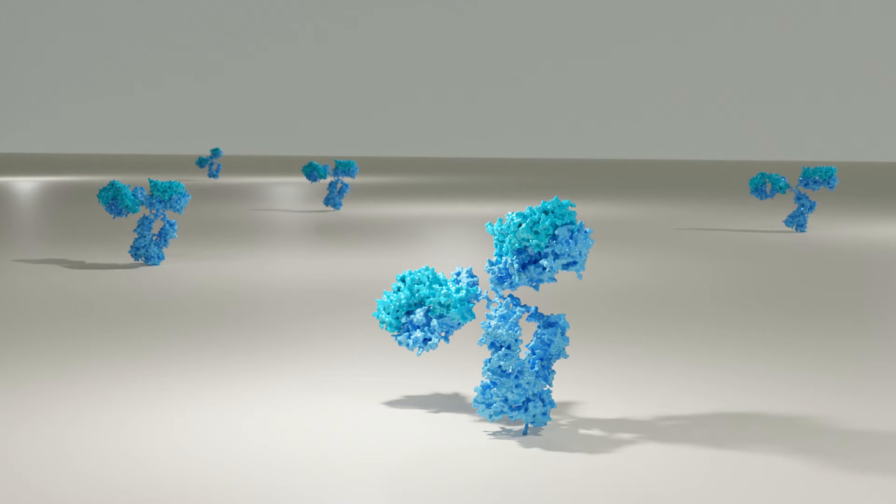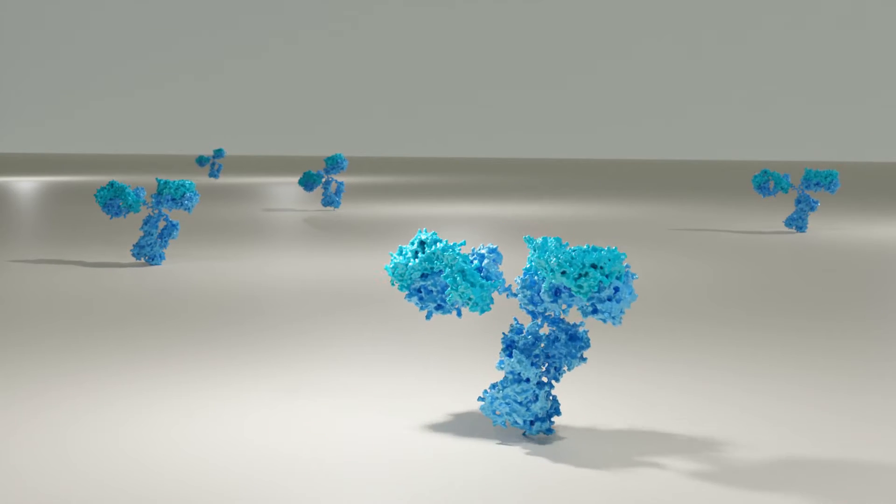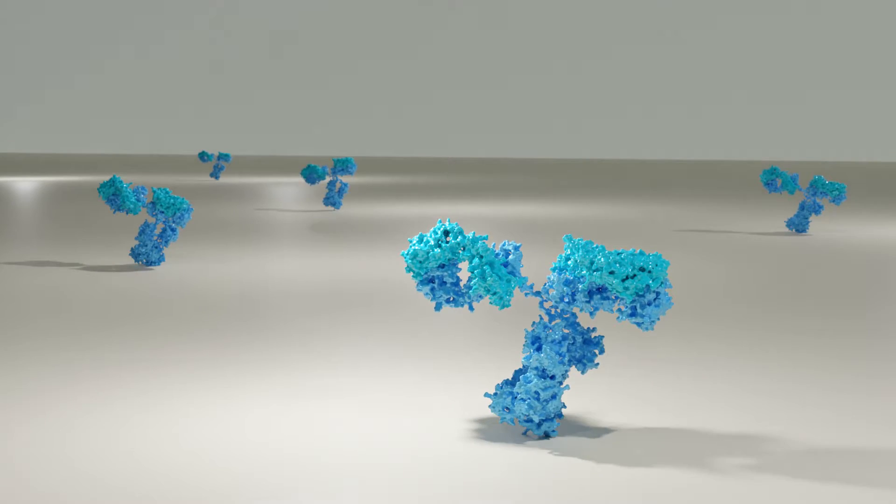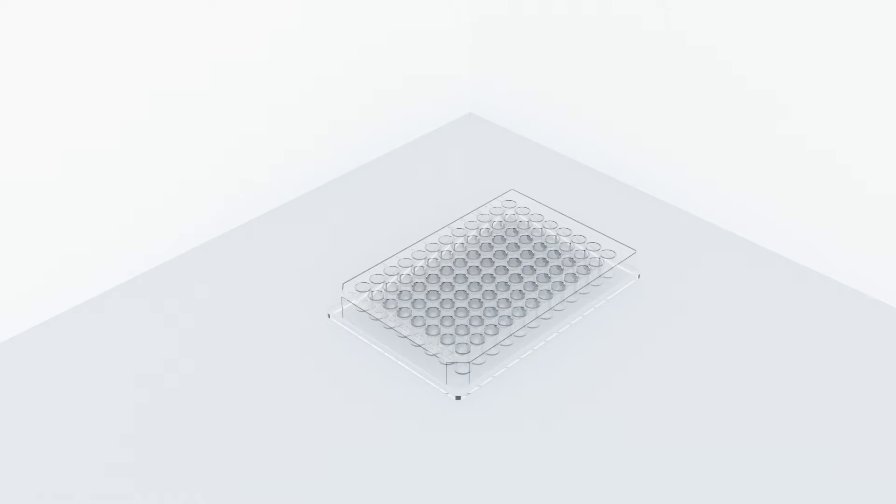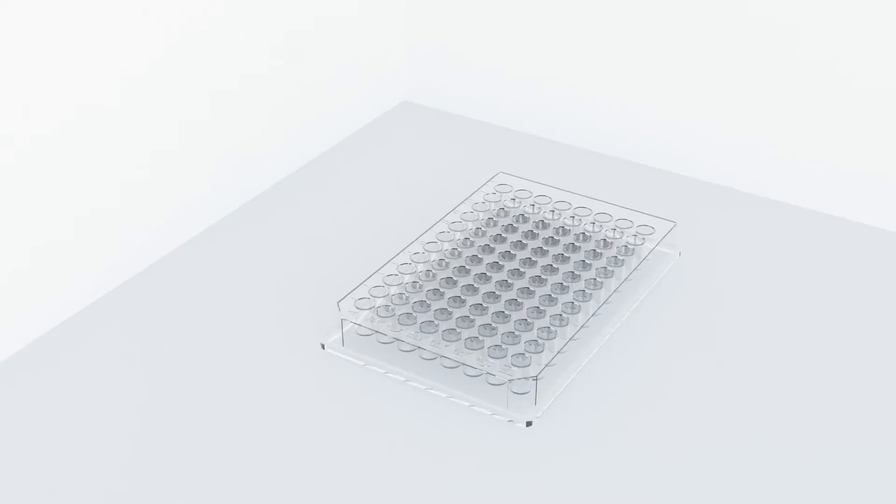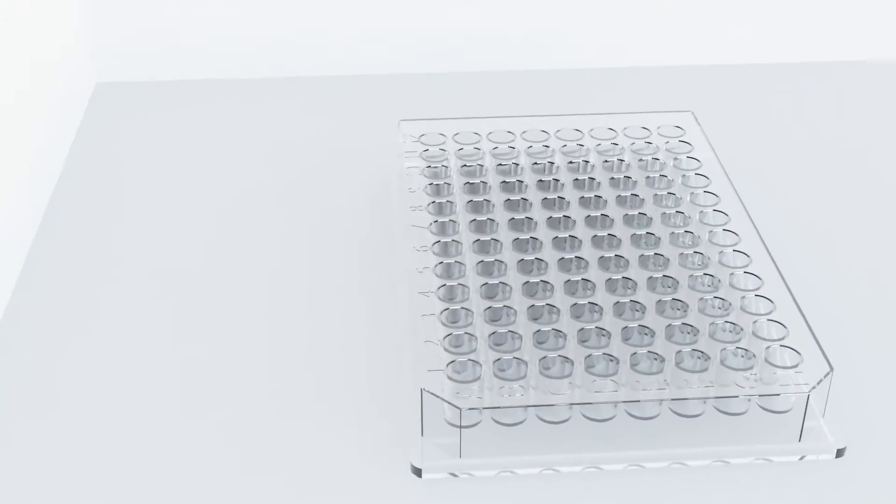ELISA lab presents the enzyme linked immunoabsorbent assay. ELISA assays are typically done in 96 well plates. Let's see what is in the bottom of the well. A bait is linked to the plastic of the well.